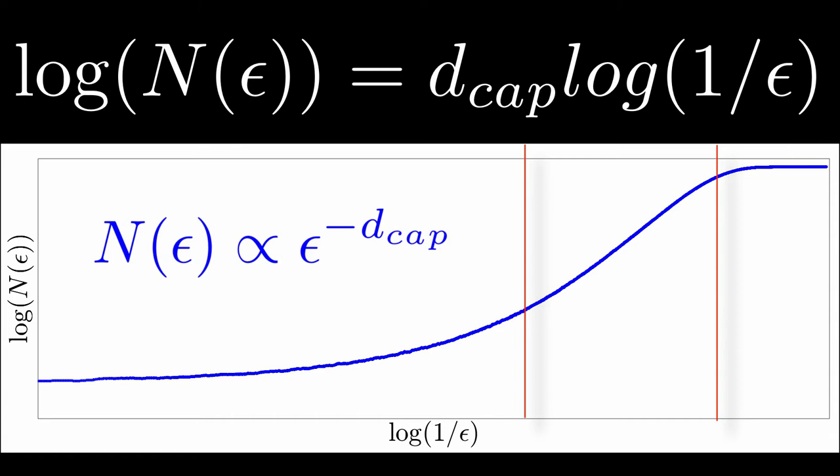This gives us the tools needed to practically estimate capacity dimension for a general object. What we will do is calculate the number of epsilon balls of particular size epsilon for a range of epsilon, make a plot like this, and then fit a line to this so-called scaling region. This will give us an approximation of the capacity dimension for a particular object. Let's carry out this algorithm for an interesting object step by step.